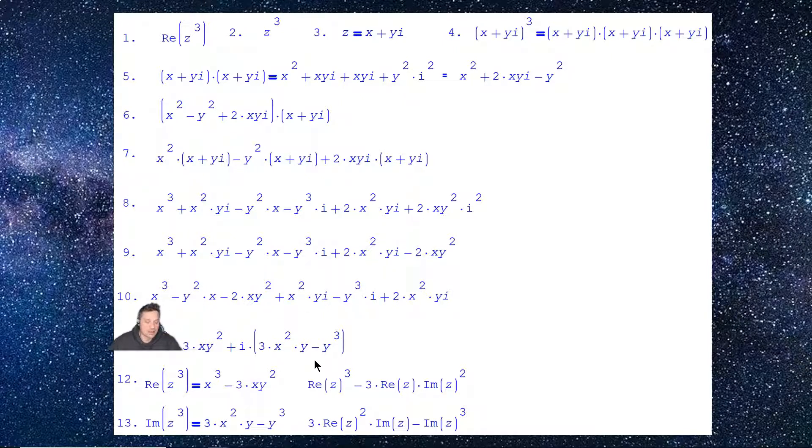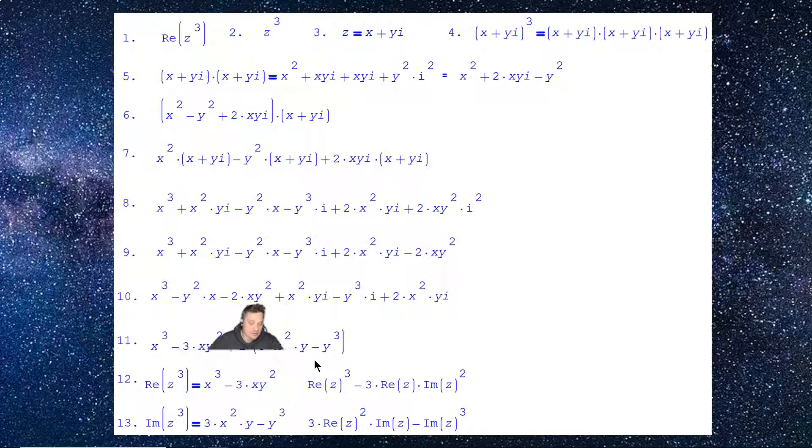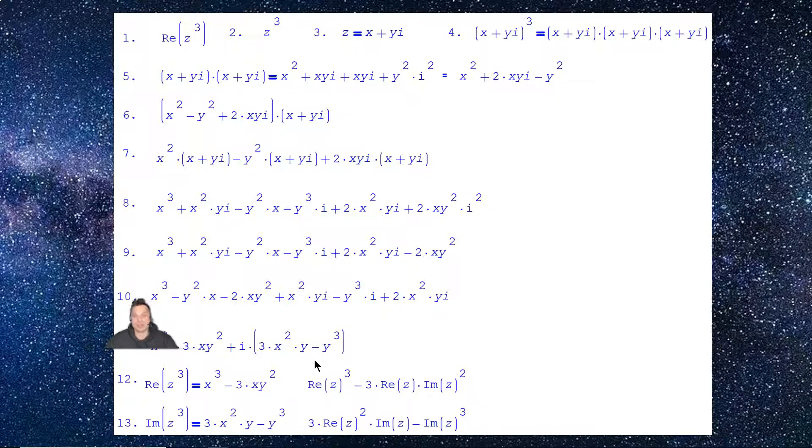So I'm going to continue. In line 10 down below, I will have x cubed minus y squared x minus 2xy squared plus x squared yi. So let's stop for a second. The x cubed minus the y squared x minus 2xy squared—oh boy. If you look through each of those terms, they don't have i. That means that those terms put together form the real part. Real part, that is, of z cubed.